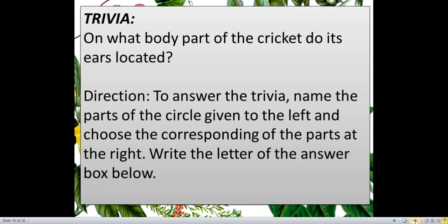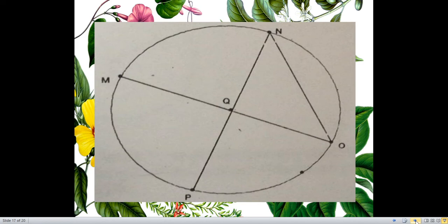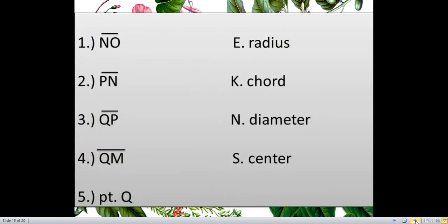Trivia. This is another thing for you to do on a piece of paper. On what body part of the cricket do its ears locate? So, just a trivia related to your science. So, direction to answer the trivia. Name the parts of the circle given to the left and choose the corresponding of the parts at the right. Write the letter of the answer box below but I wasn't able to make a box there. So, you can just write your answer at the top of the number that is being asked. So, here is the figure you are going to take a look for you to answer the 5 items.